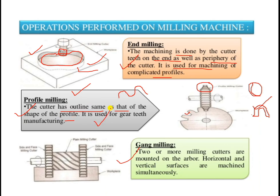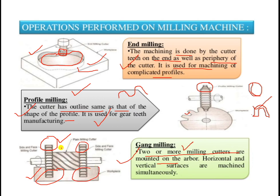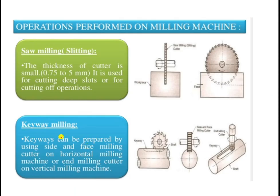Gang milling is an operation where two or more milling cutters are mounted on the arbor assembly. Instead of only one milling cutter, two or more cutters are used simultaneously, allowing material to be removed from the work piece at two locations at the same time. The arbor assembly holds multiple cutters — such as plain milling cutters and side and face milling cutters — enabling different kinds of milling operations simultaneously.